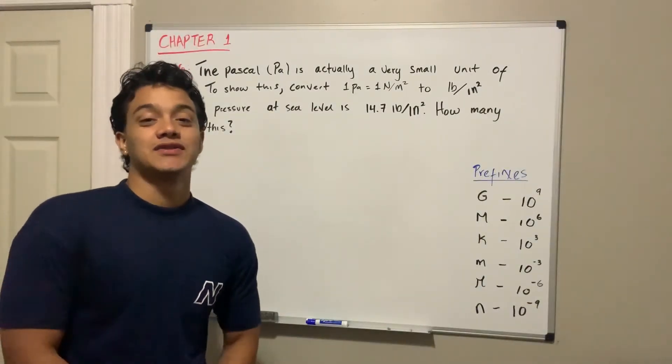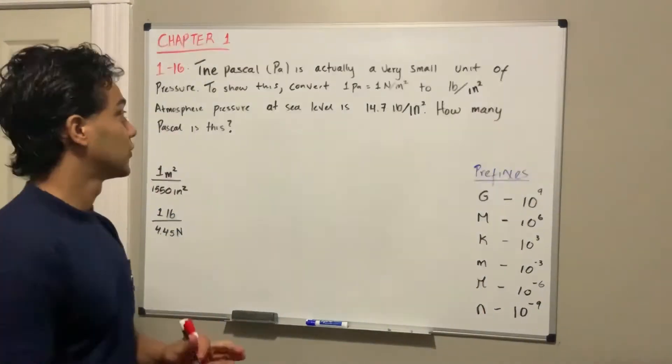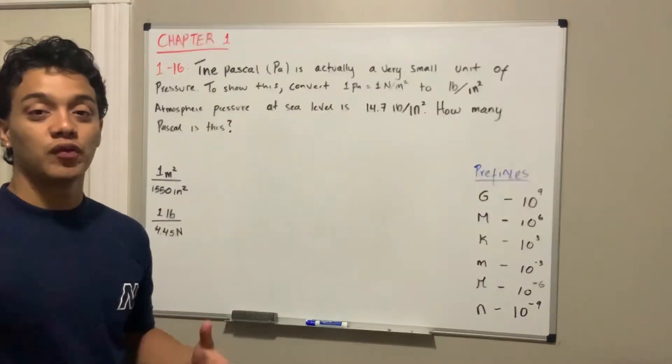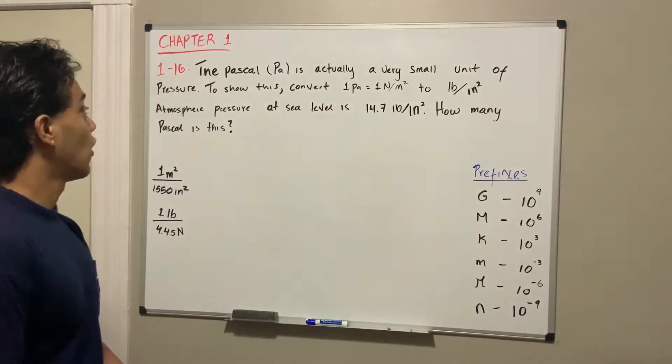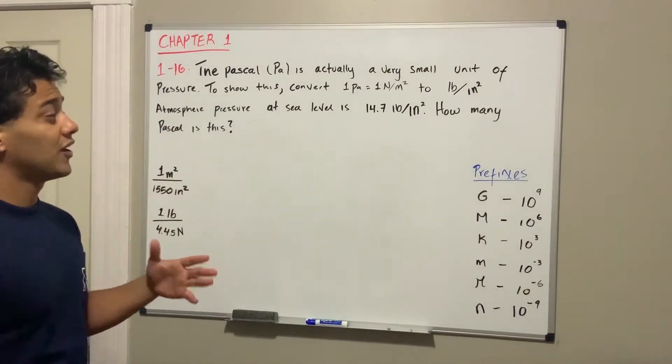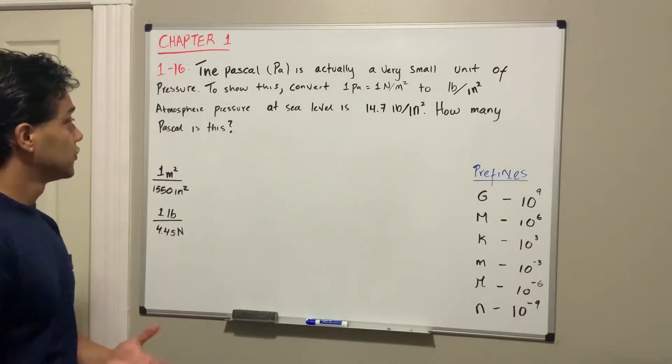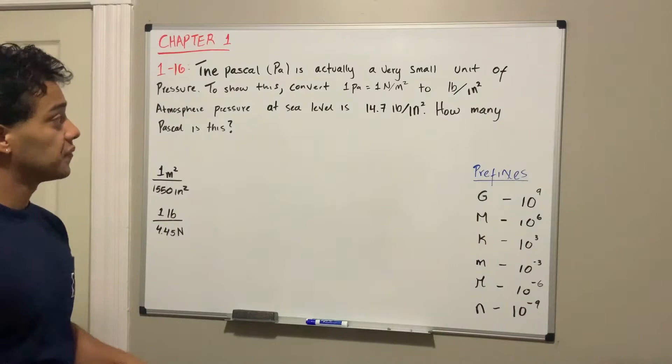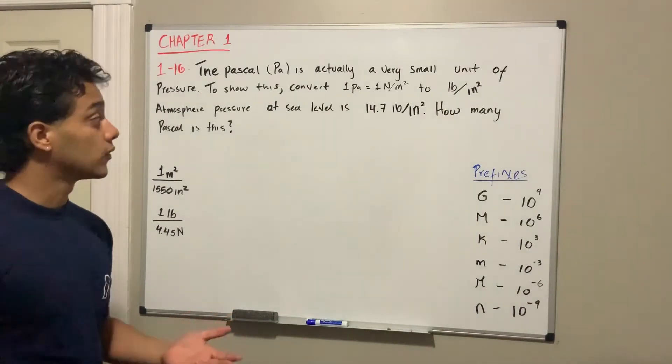Welcome back to statics. Today we're going to do problem 1.16. It says the Pascal is actually a very small unit of pressure. To show this, convert 1 Pascal, which is equal to